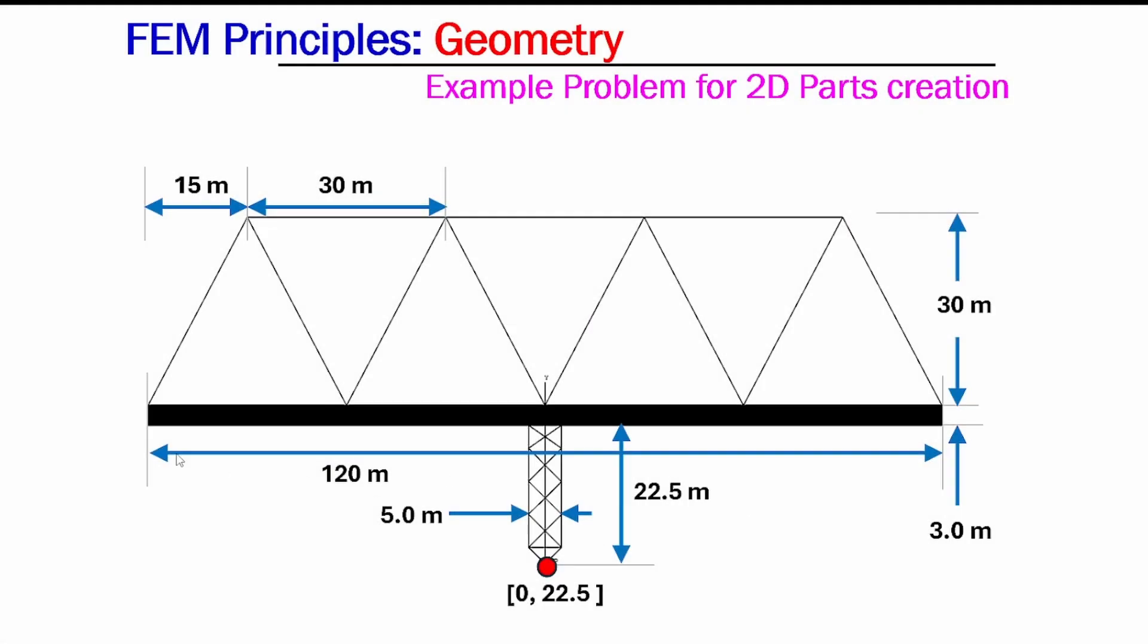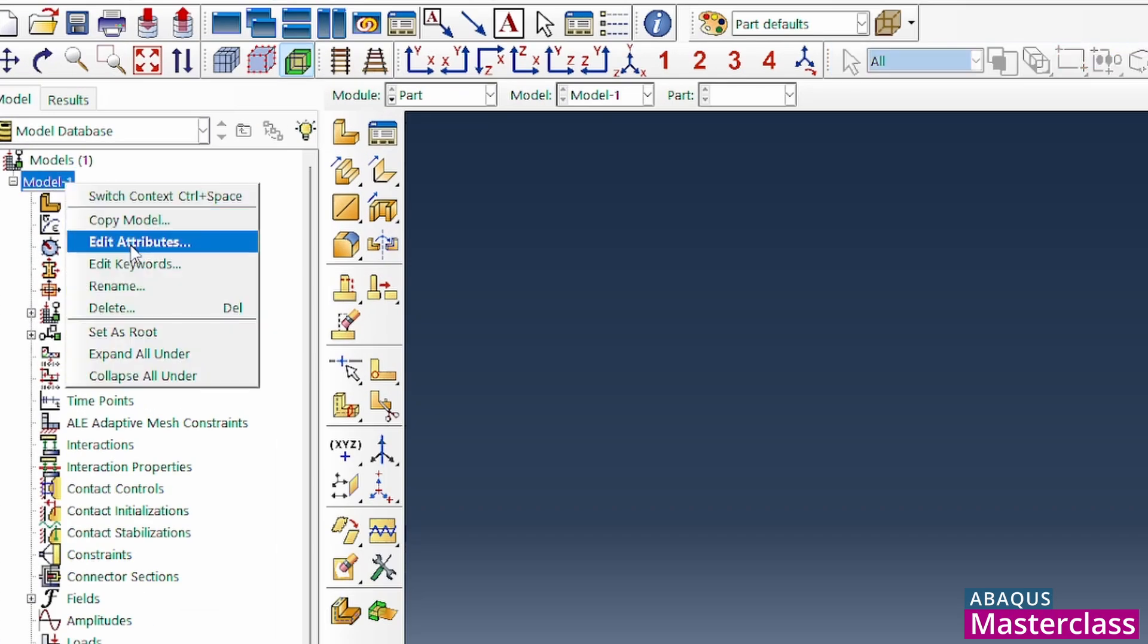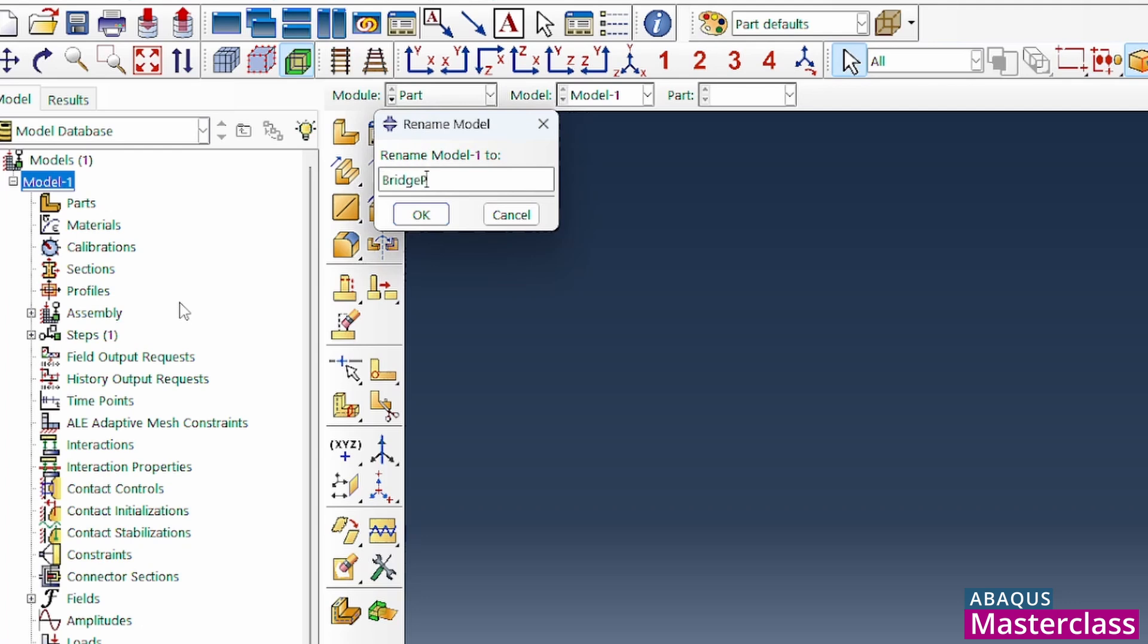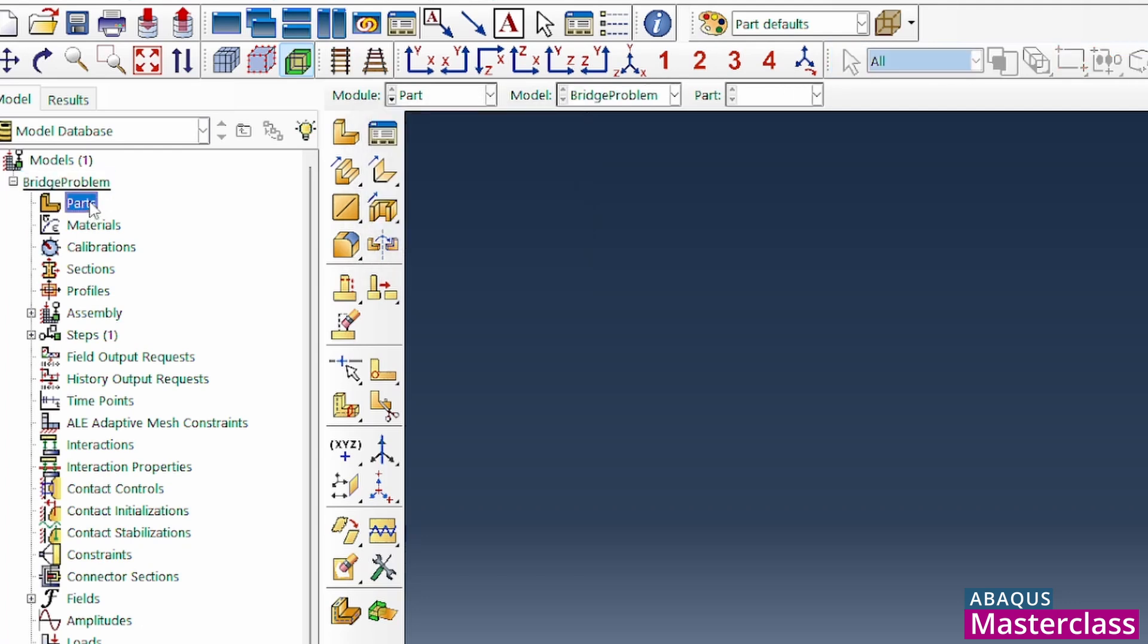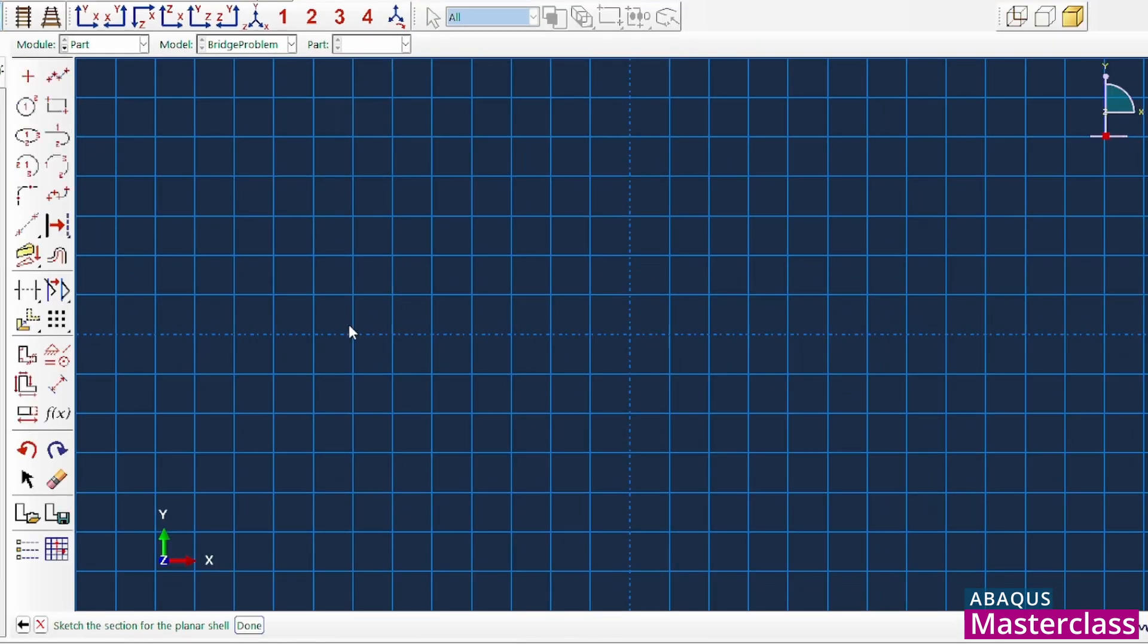So the first thing we need to do is to manufacture the part, which is 120 by 3 meters. I'll rename this, so I'm going to call it the bridge problem. And we click here, and so this first thing, we're going to call it the bridge deck. It's going to be a 2D system problem. We know it's going to be deformable. It's going to be made of a shell element. And this approximate size speaks about the total length of the sketching space. So currently, our material is 120 in length. So 200 will be okay, 200 units.